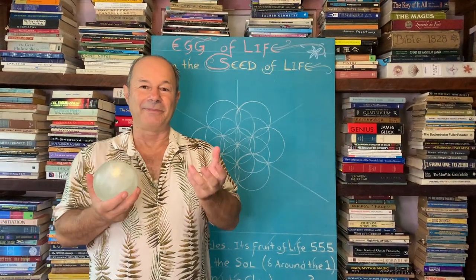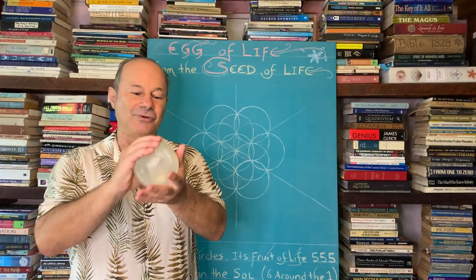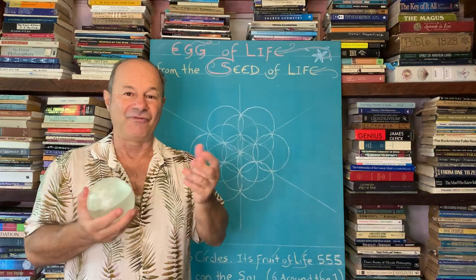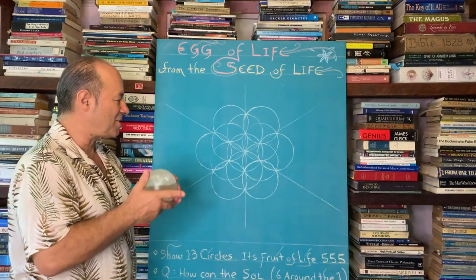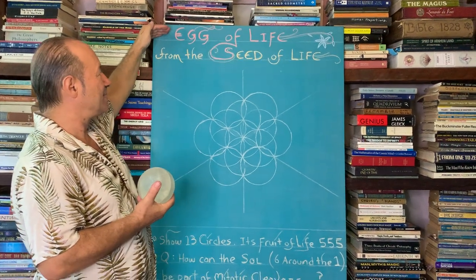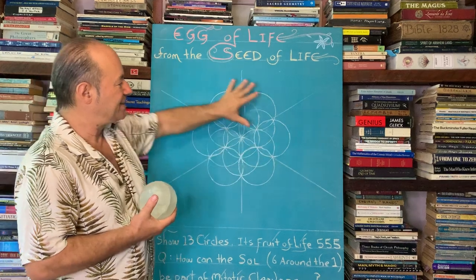I'd like to describe the beginning of creation in terms of spherical cleavage, which is the one becoming the two, becoming the four, becoming the eight. What I'd like to show is how we get to the egg of life, which is the eight original cells, and we're going to show how it's derived from the six around the one, the seed of life pattern.